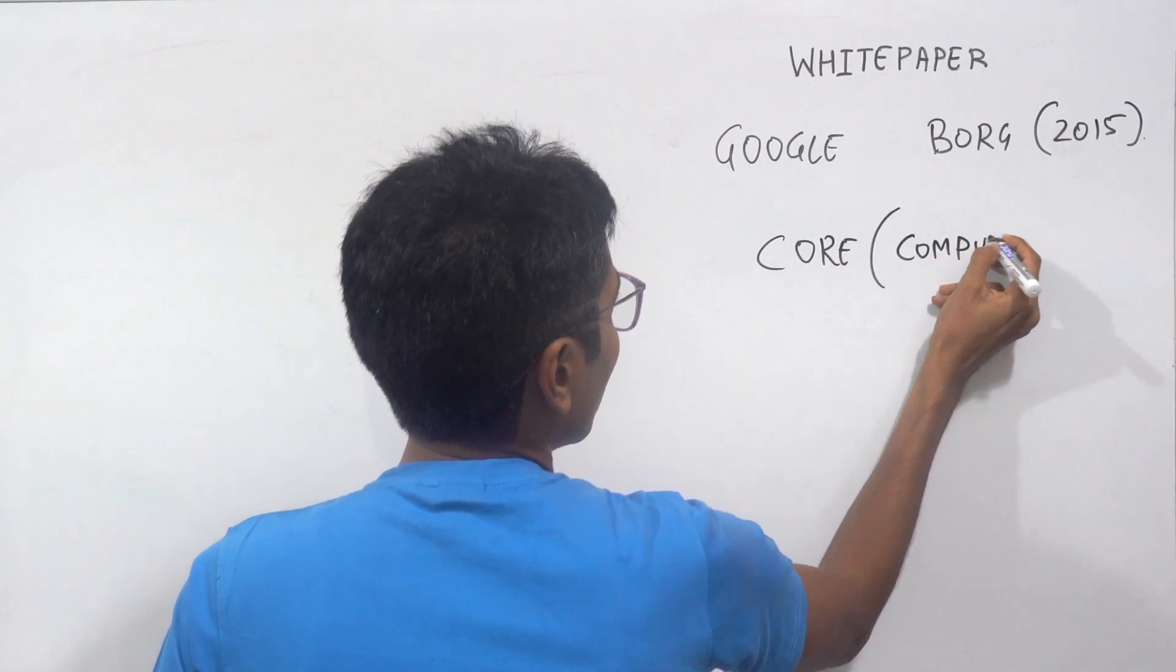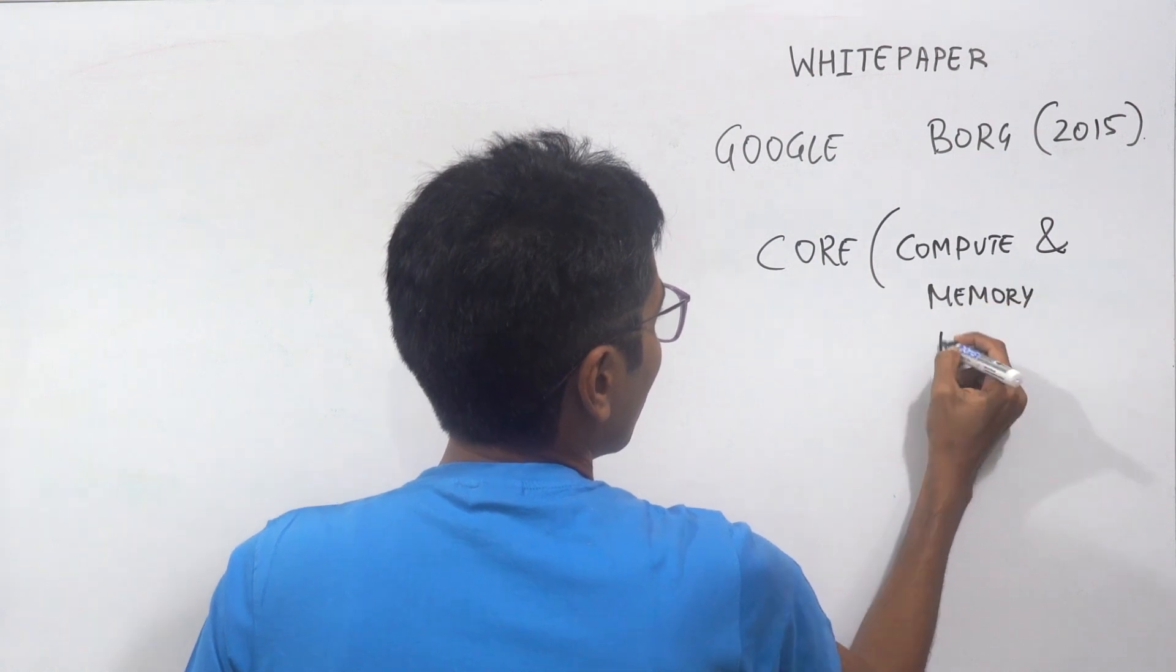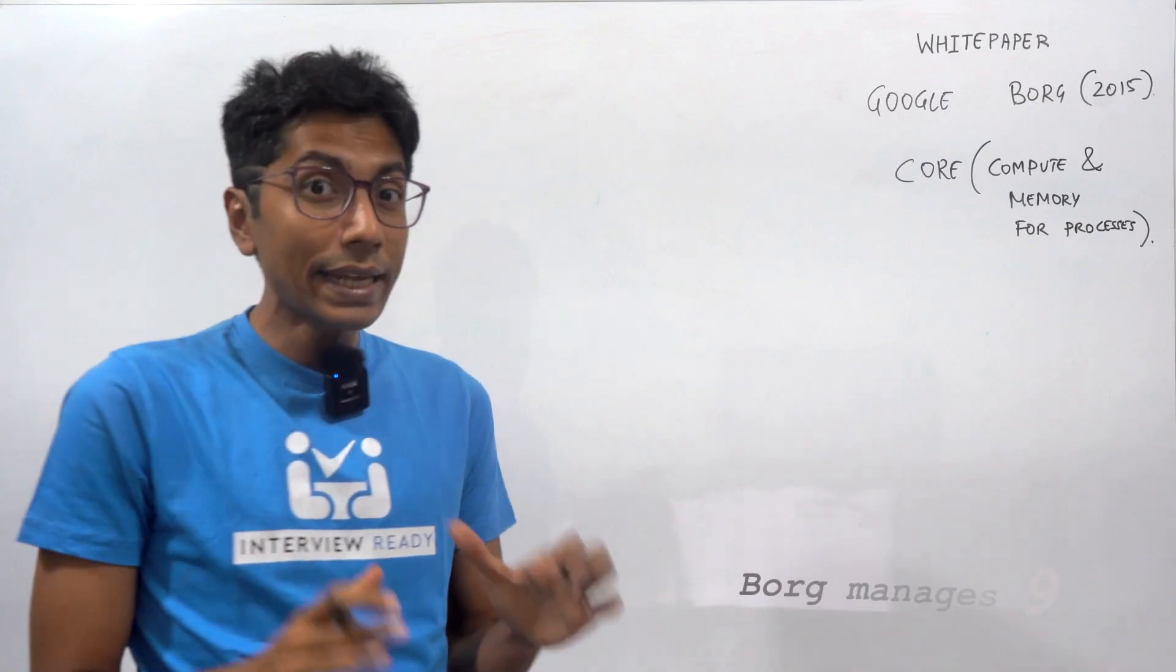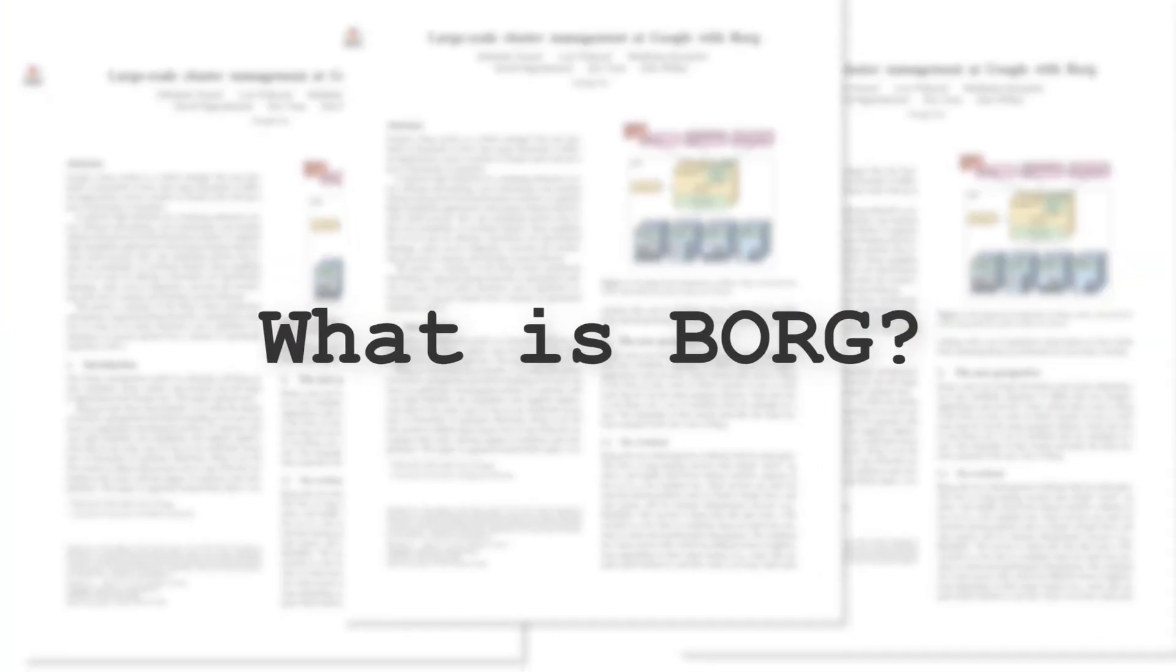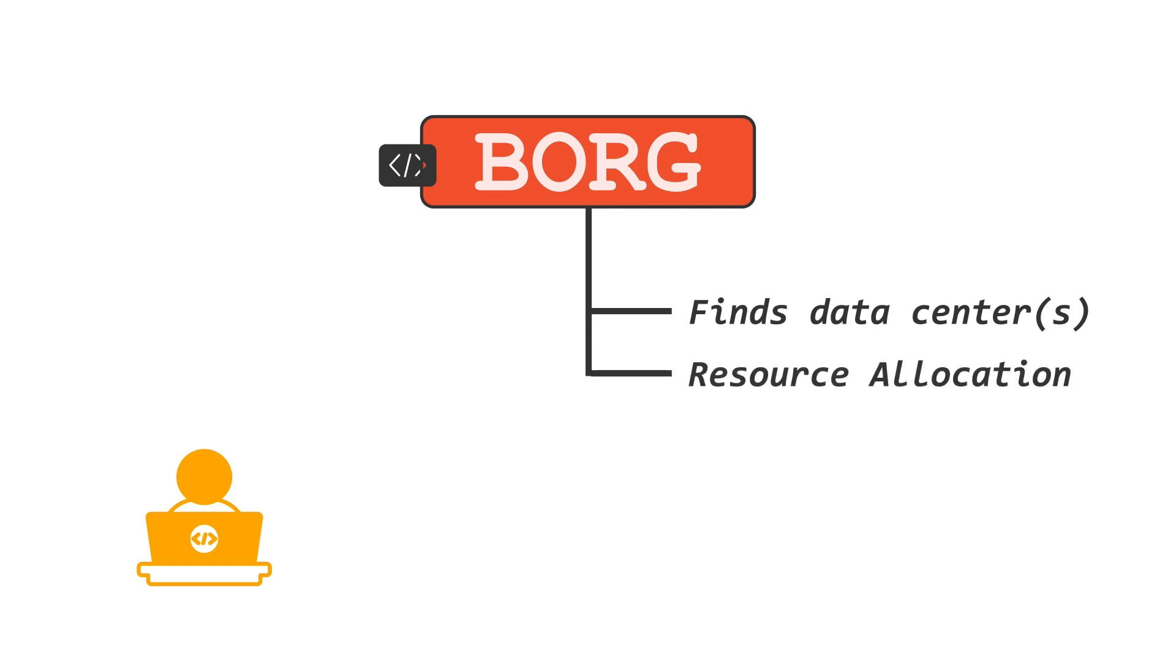It provides compute and memory for processes. 98% of all the servers at Google are running because of Borg. Borg manages the entire lifecycle of a process from start to finish. If you're an application developer, all you have to worry about is your code, and once you're ready you just deploy. Borg goes and finds the different data centers to deploy this to, finds the right number of resources that have to be allocated, makes sure that in case it crashes it's restarted, and in case it's just failing a lot then it has to be migrated. Everything end-to-end is managed by Borg.